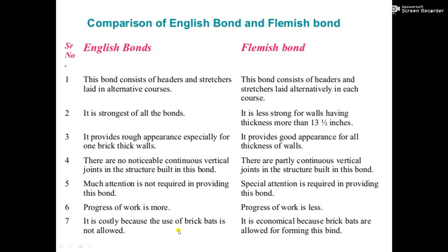English bond is costly because the use of brick bats is not allowed. Whatever bricks we are going to use in English bond should be proper and of standard shape. Use of brick bats is not allowed in English bond so as to break the verticality of the joints. But in Flemish bond, to break the vertical joints in the courses, we are using brick bats. So in Flemish bond, the use of brick bats is allowed, making it cheaper and more economical compared to English bond. This concludes the comparison between the English bond and Flemish bond.